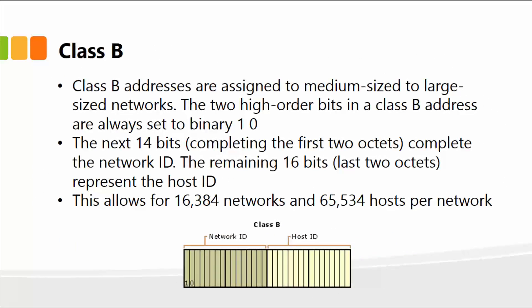Class B addresses are assigned to medium-sized to large-sized networks. The two high order bits in a class B address are always set to binary one and zero. The next 14 bits, completing the first two octets, complete the network ID, and the remaining 16 bits represent the host ID. For a class B address, you can have about 16,384 networks with 65,534 hosts per network.